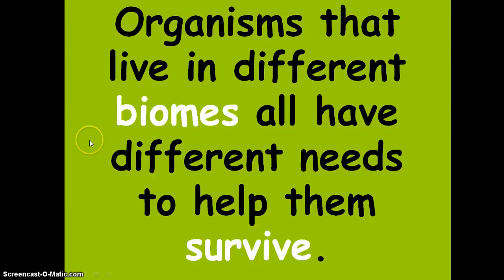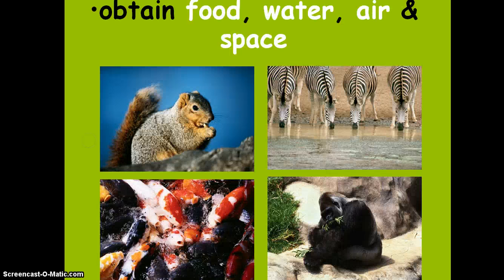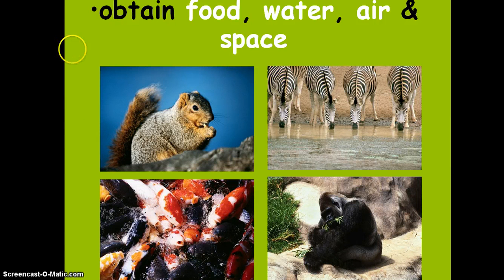Organisms that live in different biomes all have different needs to help them survive. In order to survive, an organism must be able to obtain food, water, air, and space. In this image, you can see the squirrel and the gorilla are trying to obtain food. The fish are dealing with limited space and the zebra is working at getting enough water to drink.